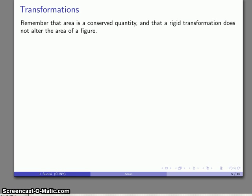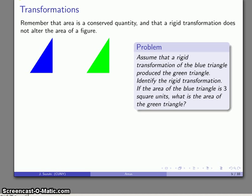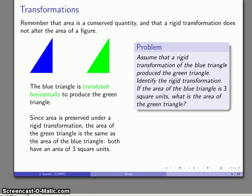Area is a conserved quantity and a rigid transformation does not alter the area of a figure. I can move things, translate things, rotate things, or even do reflections, and the figure still has the same area. For example, assume there's some rigid transformation that turned this blue triangle into the green triangle. Since it looks like the triangle has just moved over some distance, that transformation is a horizontal translation. Area is preserved under any of these transformations, so the area of the green triangle is exactly the same as the area of the blue triangle — both triangles have an area of three square units.